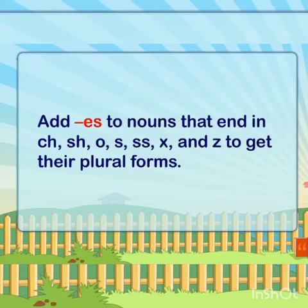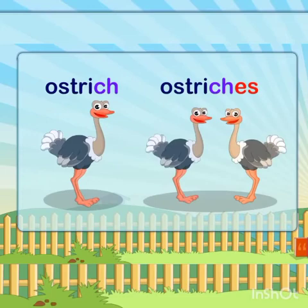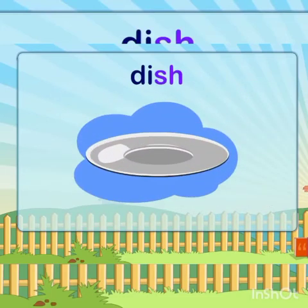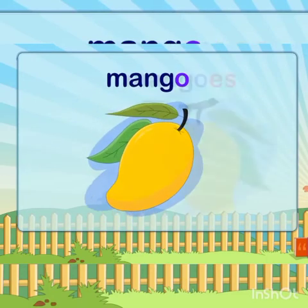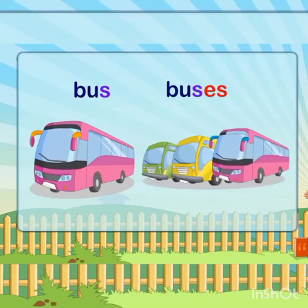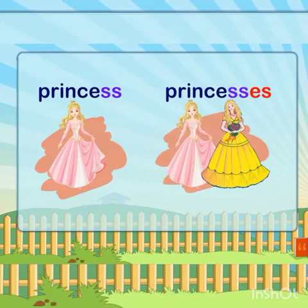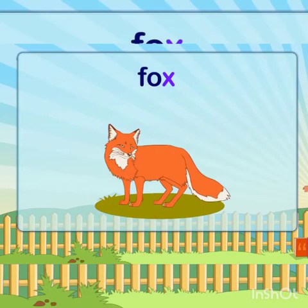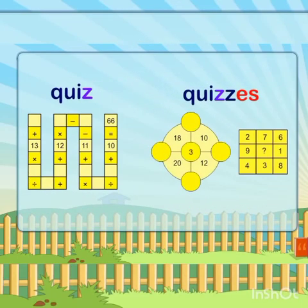But sometimes we add -es to nouns that end in ch, sh, o, s, double s, x, and z to get their plural forms. For example: 'ostrich' ends in ch — plural is 'ostriches.' 'Dish' ends in sh — plural is 'dishes.' 'Mango' becomes 'mangoes.' 'Bus' becomes 'buses.' 'Princess' becomes 'princesses.' 'Fox' ends with x — plural is 'foxes.' 'Quiz' ends with z — plural is 'quizzes.'